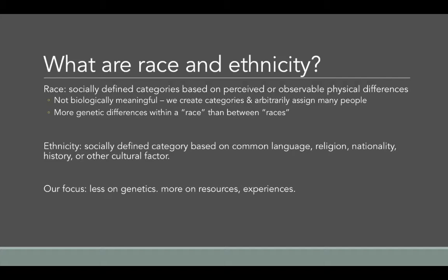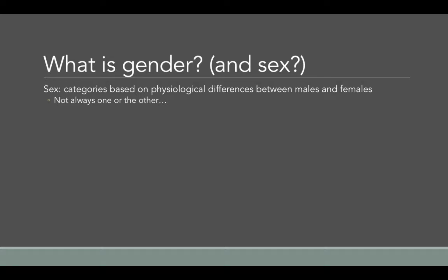We can also talk about gender, and in talking about gender we should also talk about sex. Sex refers to categories based on physiological or bodily differences between males and females. We think this is pretty cut and dry — either you have male body parts or female body parts — but as you read in your textbook, it's not always one or the other. A small percentage of people in the United States and in the world are born intersex, meaning they are born with ambiguous genitalia.